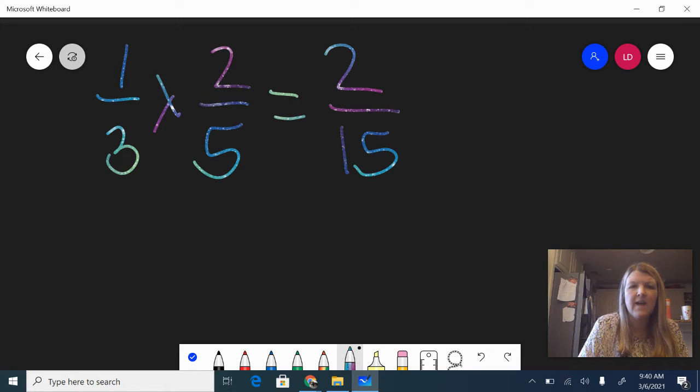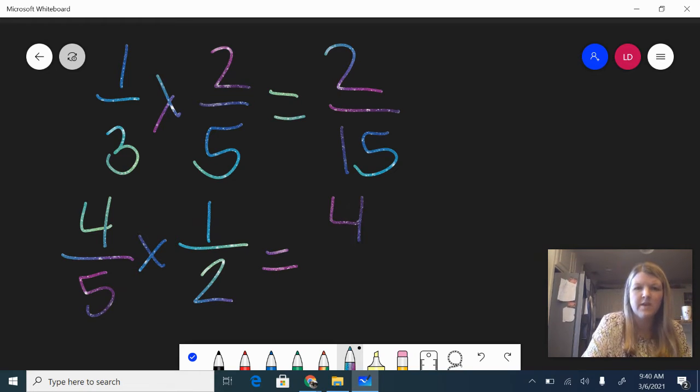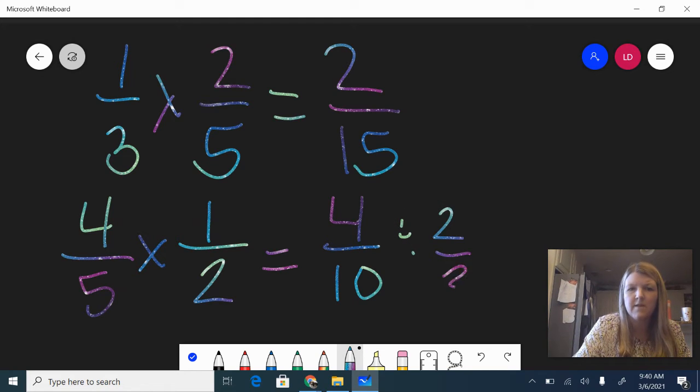If I had one where I needed to simplify, let's say four-fifths times one-half. Now I'm going to multiply the numerators: four times one gives me four, five times two gives me ten. I know these are both even numbers, so I can divide them both by two to simplify. Four divided by two gives me two, ten divided by two gives me five. So two-fifths is the simplified form of four-tenths.